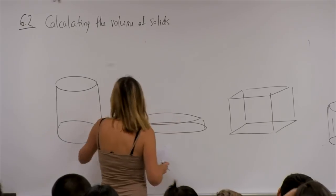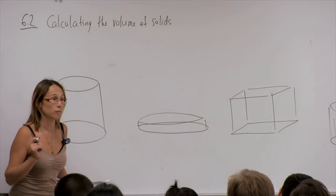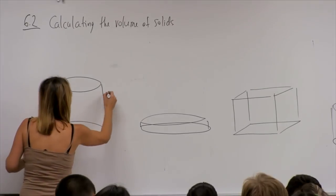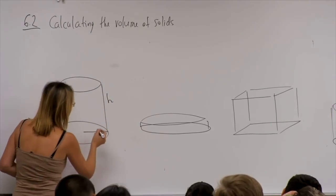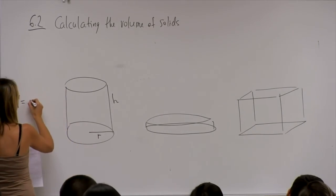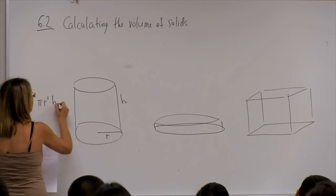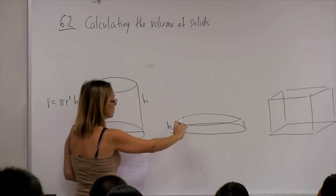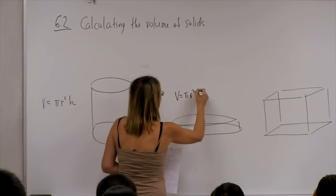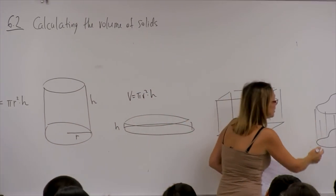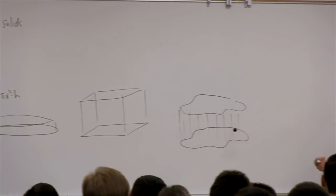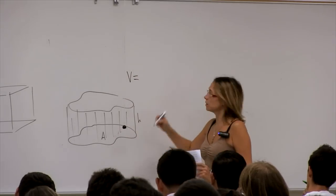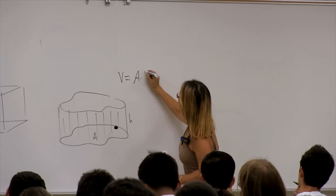Cylinders are great because we know how to calculate their volume. Today's lecture is devoted to volumes. For instance, if we have the height h and radius r, then the volume is pi r squared times h. The same formula holds for a thin cylinder: pi r squared h.